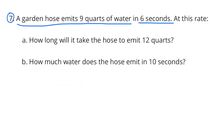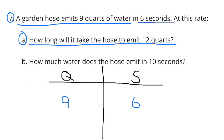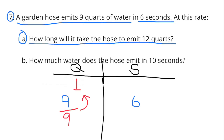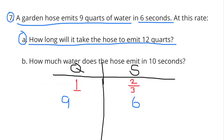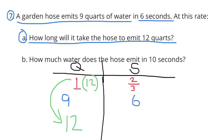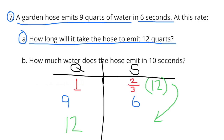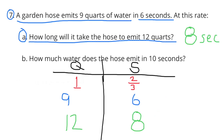Number 7: a garden hose emits 9 quarts of water in 6 seconds. At this rate, A: how long will it take the hose to emit 12 quarts? I made a table with 9 quarts on the left and 6 seconds on the right. 9 quarts divided by 9 equals 1 quart, and 6 seconds divided by 9 equals 6 ninths, which reduces to 2 thirds. Then 1 quart times 12 equals 12 quarts, and 2 thirds times 12 equals 8. It takes 8 seconds for the hose to emit 12 quarts.